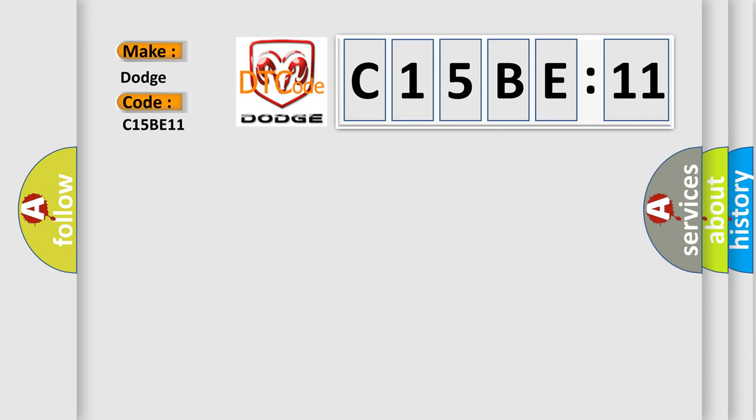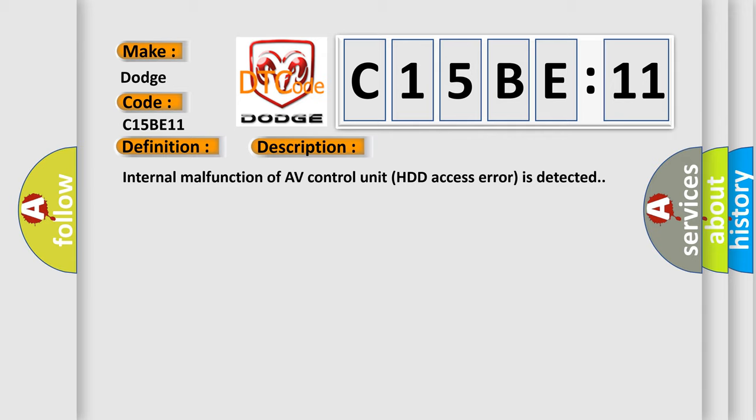The basic definition is AV control unit HDD access. And now this is a short description of this DTC code. Internal malfunction of AV control unit HDD access error is detected. This diagnostic error occurs most often in these cases.